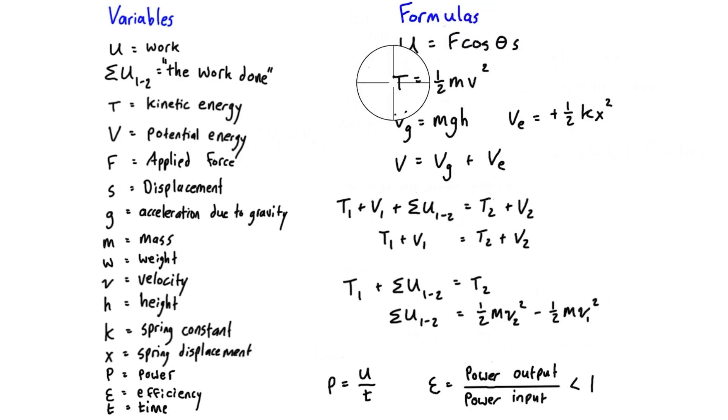Capital T is what we use for kinetic energy: one half mv squared. M is mass in units of kilograms, V is velocity in units of meters per second.